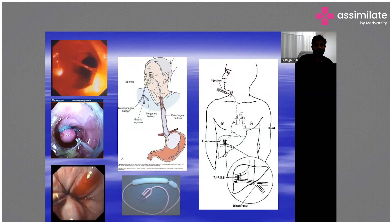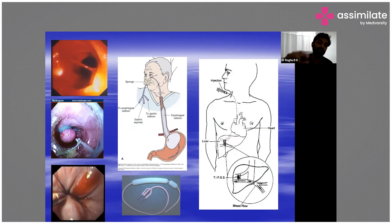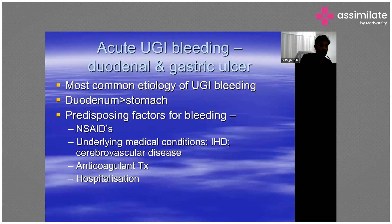The bottom right image shows TIPS — Transjugular Intrahepatic Portosystemic Stent Shunting. You go through the jugular vein and place a communication inside the liver between the portal and systemic circulation to decrease portal pressures. This is done by interventional radiologists when endoscopic therapy and other measures have not worked.